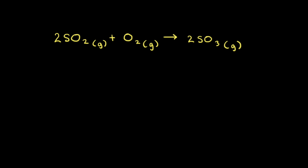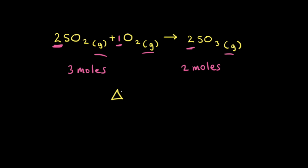For our final situation, let's look at a reaction that involves only gases. On the left side, there are two moles of SO2 and one mole of O2 — so there are three moles of gas on the reactant side. And on the product side, there are two moles of gas. Let's think about the change in entropy for this reaction, delta S, which equals the final entropy minus the initial entropy. We went from three moles of gas to two moles of gas.